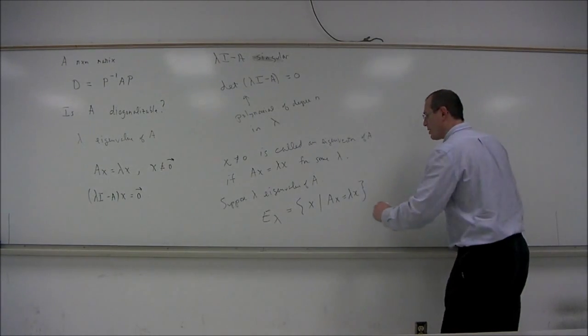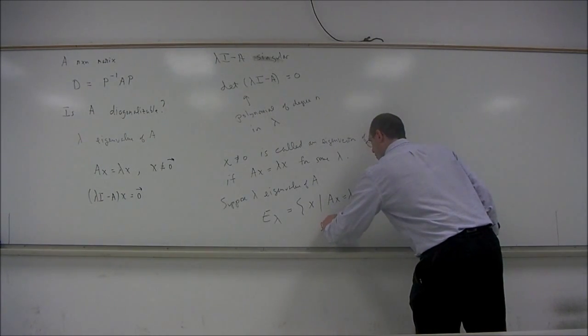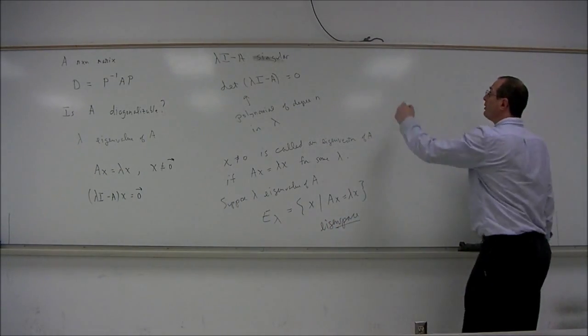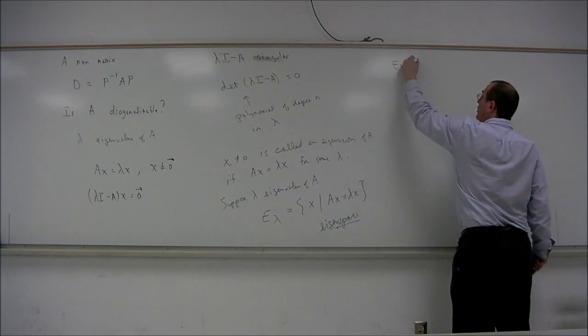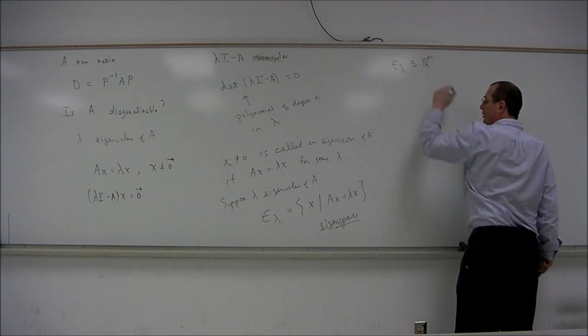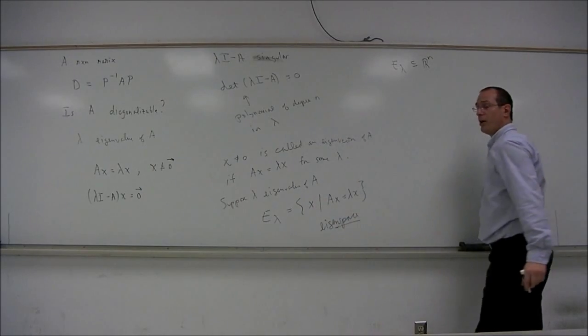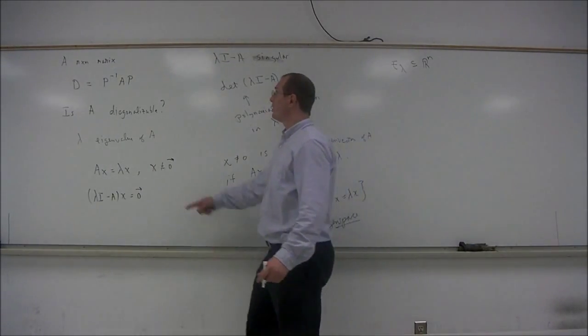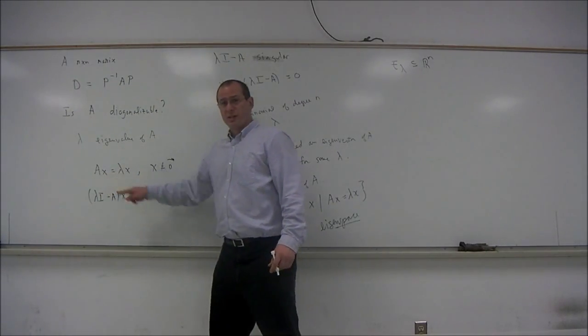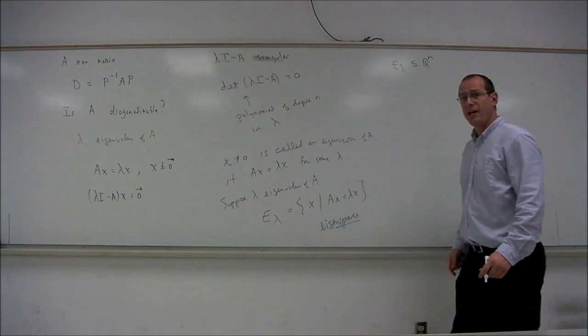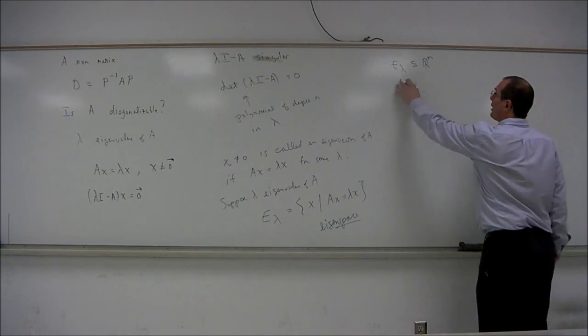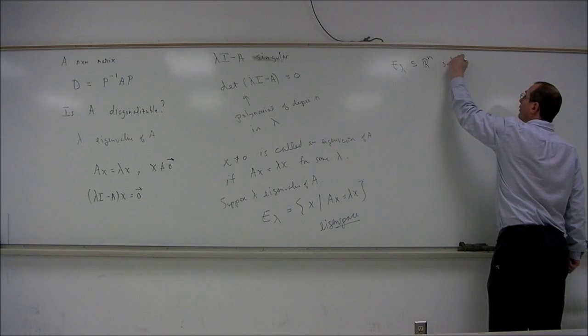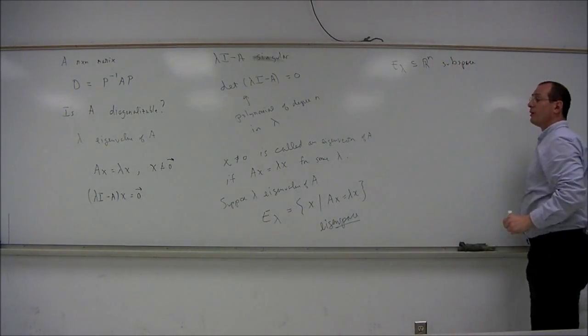This is called the eigenspace. The reason it's called an eigenspace is because E sub lambda, which is a subset of R n, because these vectors X are in R n, because A is an N by N matrix. So here the vector X is a column vector in R n. So E sub lambda is a subspace of R n.